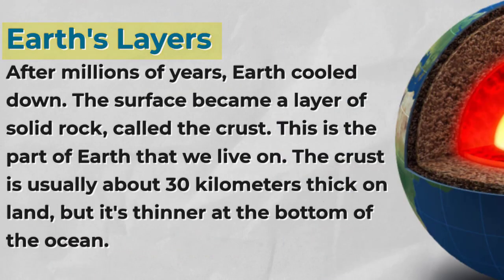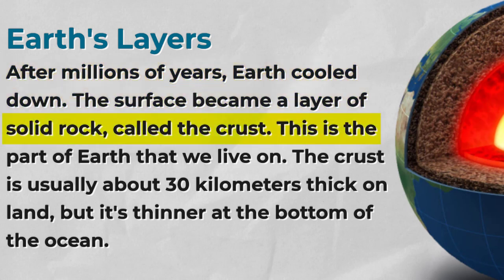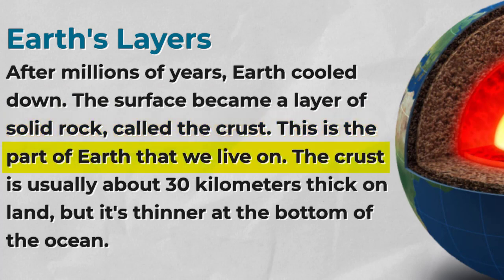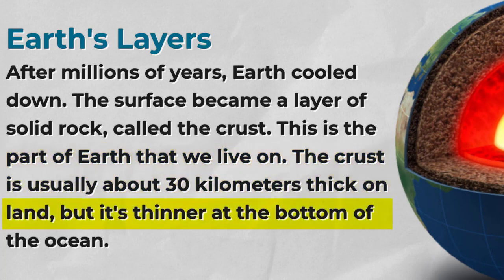Earth's Layers. After millions of years, Earth cooled down. The surface became a layer of solid rock, called the crust. This is the part of Earth that we live on. The crust is usually about 30 kilometers thick on land, but it's thinner at the bottom of the ocean.